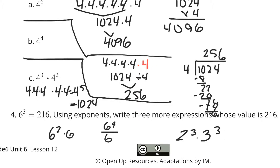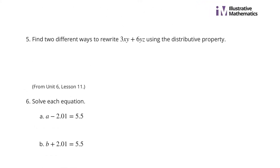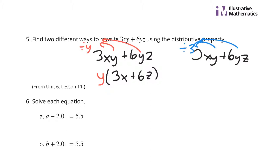Let's continue on. Find two different ways to rewrite 3xy plus 6yz using the distributive property. Well, both of these terms have a y in them, so I could factor out a y. From 3xy plus 6yz, I could divide a y out of both of these, and I'm left with y times (3x plus 6z). What else could I do? Well, if we have 3xy plus 6yz, I can also factor a 3 out of both terms. So if I divide a 3 out, what we're left with is 3 times (xy plus 2yz). That's just two of many.